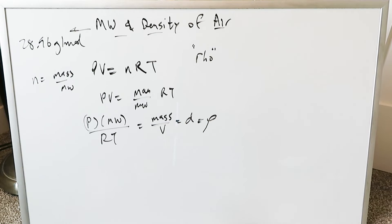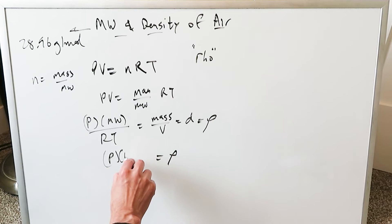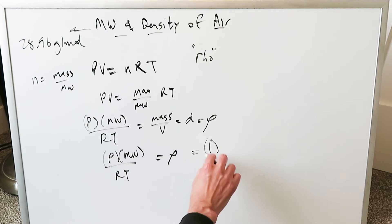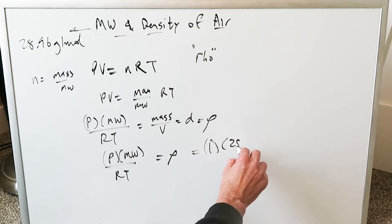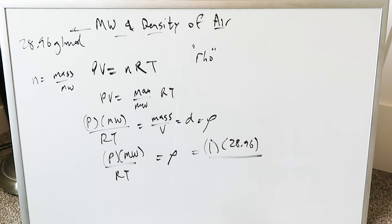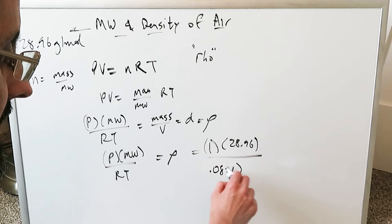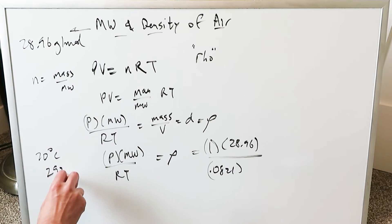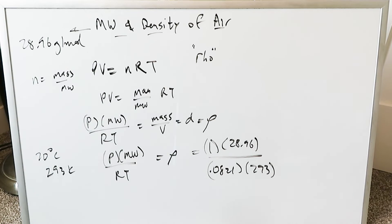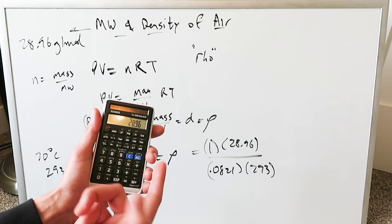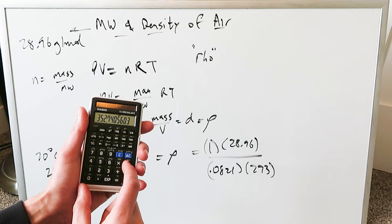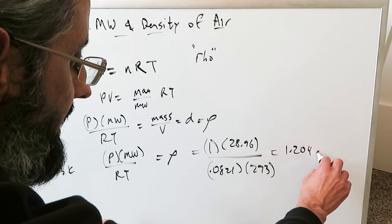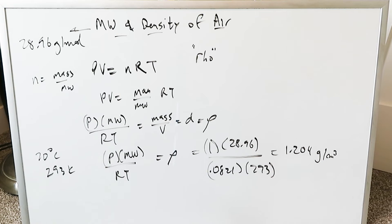So rho equals pressure times molecular weight of air divided by RT. For pressure, we put one atmosphere. The molecular weight we've determined is 28.96 grams per mole. R is 0.0821, and for temperature we use the global average of 20 degrees Celsius, which is 293 Kelvin. Doing that computation: 28.96 times 1 divided by 0.0821 divided by 293, you're getting 1.2038. So density equals 1.2038 grams per centimeter cubed.